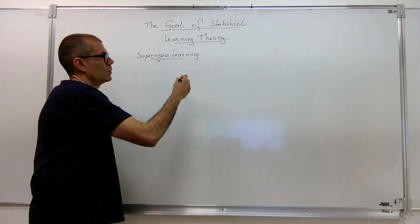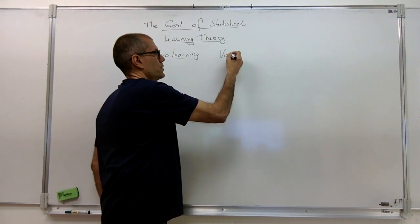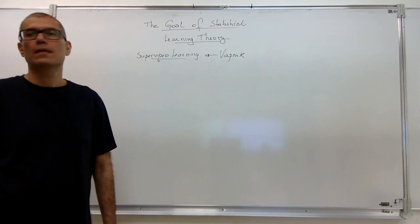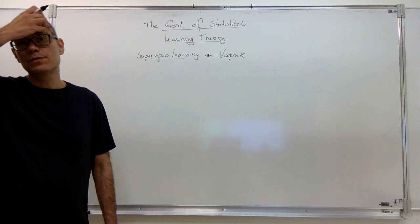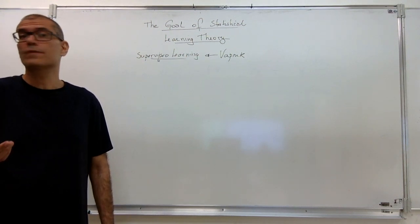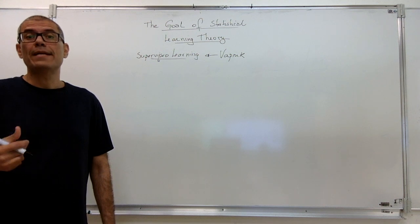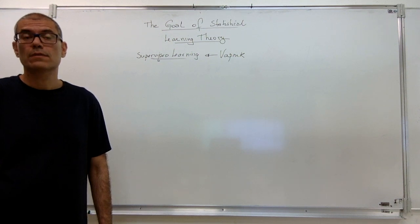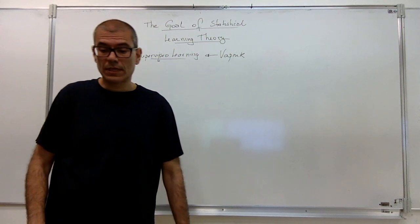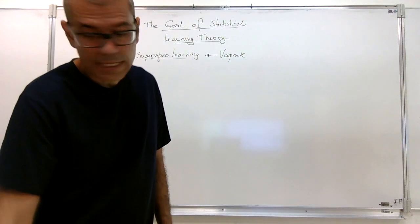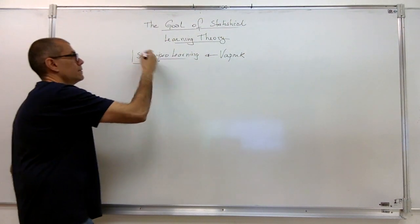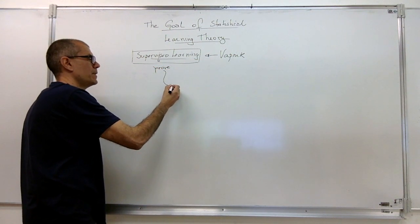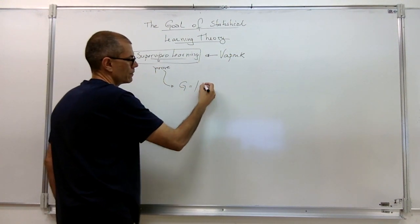So if we consider what Vapnik, this Russian guy who came up with the theory, was interested, was improving supervised learning. So everything I'm going to talk about is useful to understand sample sizes, for example, to understand the space of admissible functions or bias of some sort of algorithm we are working with. So at the beginning, I defined how we can prove learning. The basic idea that Vapnik had was to define a generalization term.